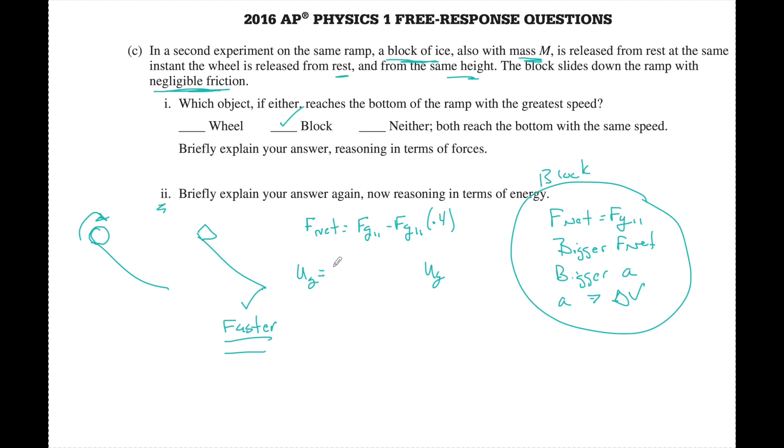If I look at it in terms of energy, initially we both have gravitational potential energy which is equal. But for the wheel, it's going to be converted into kinetic energy linear plus the kinetic energy rotational. So at the bottom, it's going to have less linear kinetic energy, because here all I'm doing is kinetic energy linear because there's no rotation of the block. So this is going to have a greater kinetic energy.